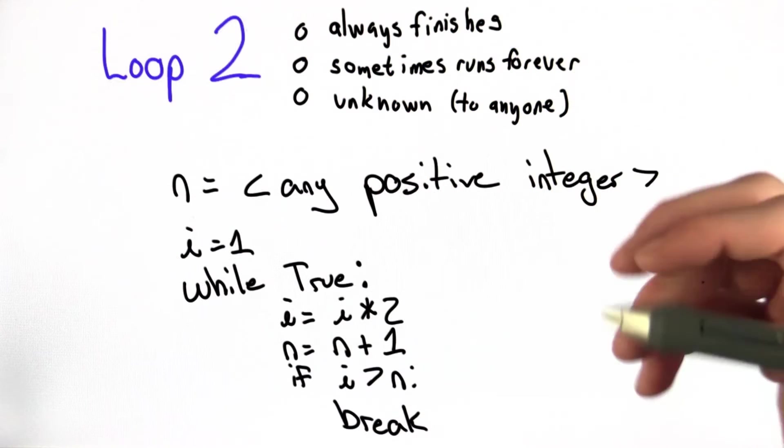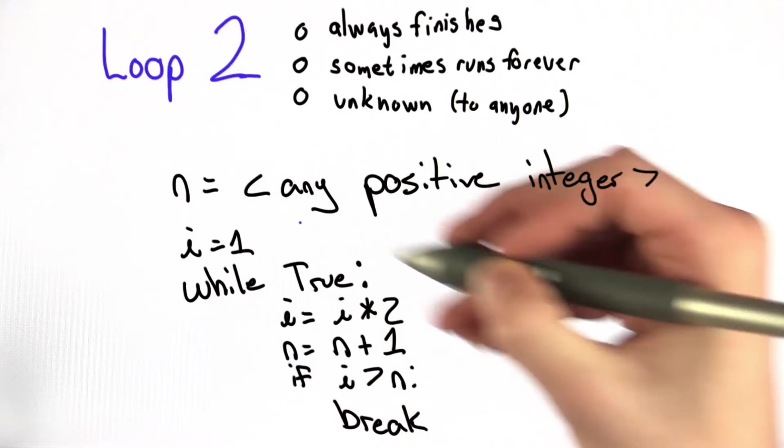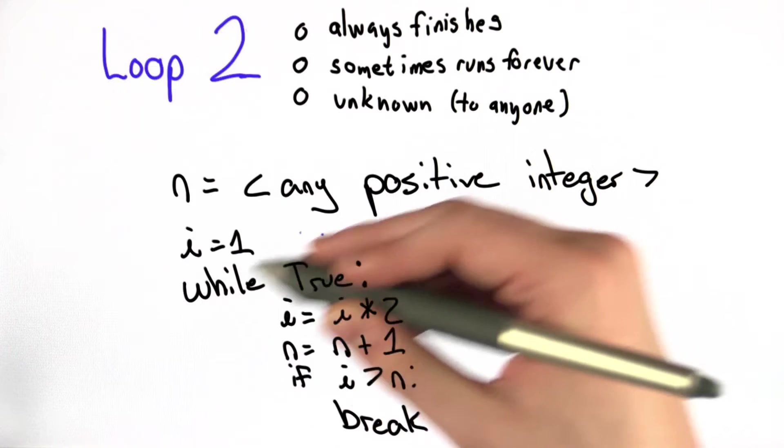Like the previous loop, let's look at what we have. We have a positive integer n, i which starts at 1, and here a while true loop.